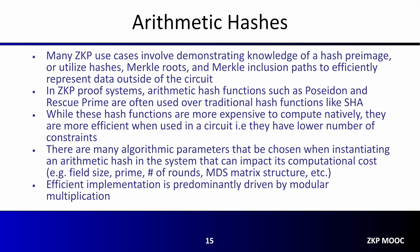When deploying these hash functions, there are many algorithmic parameters that can be chosen when instantiating the hash, which can impact the computational cost. Some of these parameters include the field size, the field prime, the number of rounds, the MDS matrix structure, and more. At the end of the day, however, efficient implementation of this primitive is predominantly driven by modular multiplication.